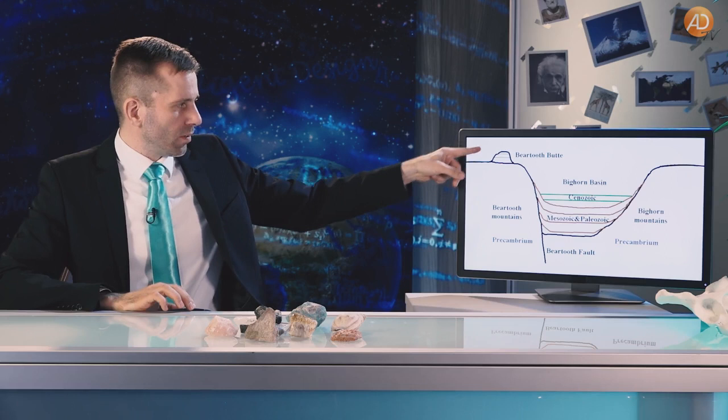Es gibt mindestens zwei Theorien. Die eine Theorie der Evolutionswissenschaftler besagt, der Beartooth Butte war Teil von diesen Schichten und ist dann hochgeschoben worden, bis er irgendwann da oben sitzt, wo wir ihn heute entdecken. Allerdings ist das ein Berg – wenn so ein Berg verschoben wird, erwarten wir, dass er Spuren hinterlässt. Wenn wir diesen Hang untersuchen, finden wir da gar nichts: weder Verglasung, noch Brandspuren, noch Schleifspuren, dass da irgendwann mal ein riesiger Berg hochgeschoben worden ist. Es sieht so aus, als würde der Beartooth Butte schon seit Ewigkeiten da oben sitzen.